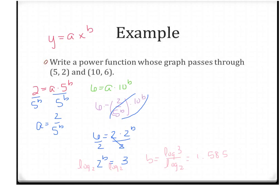Coming back to a: a = 2/5^1.585 ≈ 0.156. So once we have a and b, our final equation is y = 0.156·x^1.585. And there is your power function.